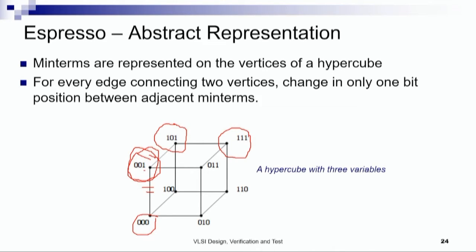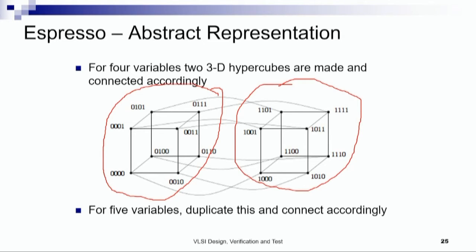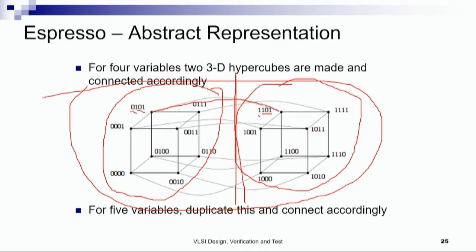Similarly, 000 and 100 differ in only 1 position. Adjacent minterms connected by an edge on the cube always change by 1 bit position. For 4 variables, we take 2 identical 3-variable hypercubes and make connections accordingly — only the MSB changes between corresponding vertices. For 5 variables, we duplicate this whole structure and again make connections accordingly.